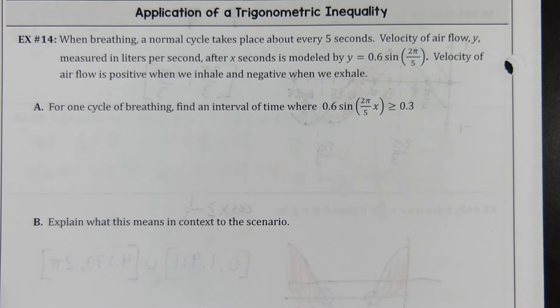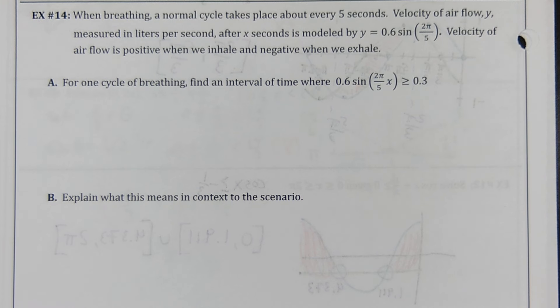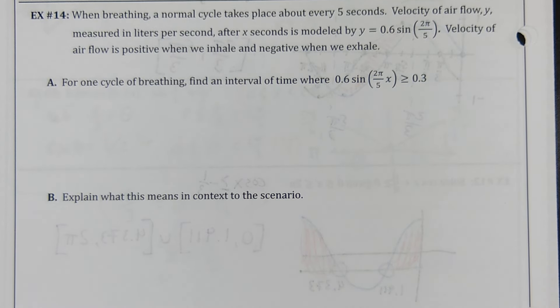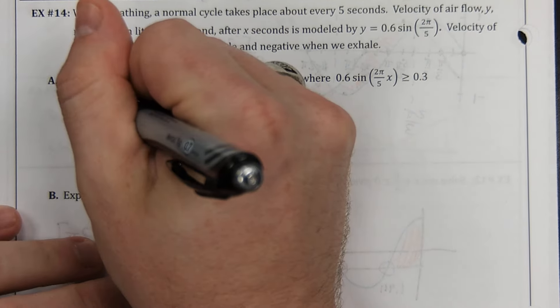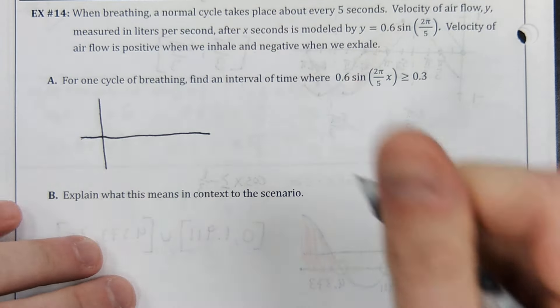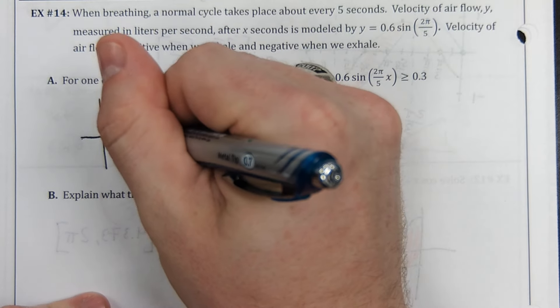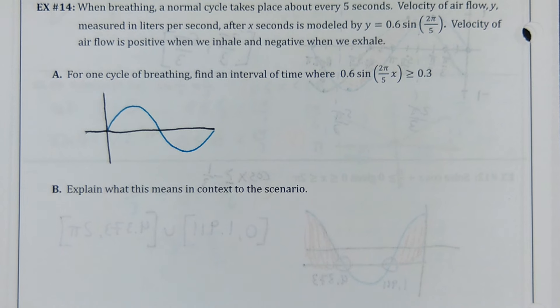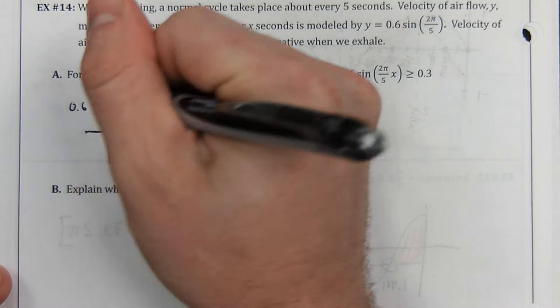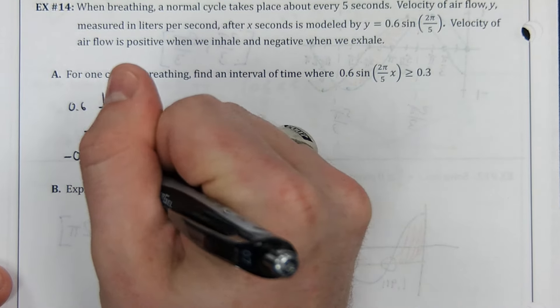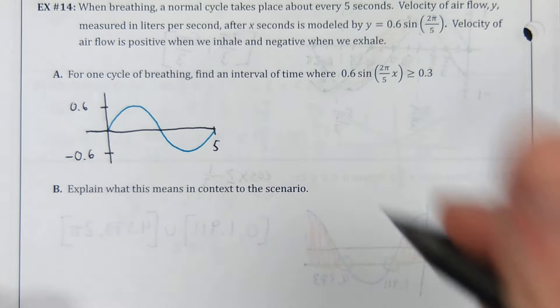Alright. Word problems. When breathing, a normal cycle takes place about every 5 seconds. So that's the period length. Velocity of airflow, y, measured in liters per second after x seconds, is modeled by this equation. Velocity of airflow is positive when we inhale, negative when we exhale. For one cycle of breathing, we're going to find an interval of time where this occurs. Time for a rough sketch. This is a positive sine wave. That's a pretty good sine wave. I'm impressed.